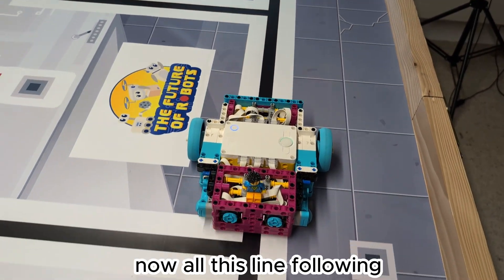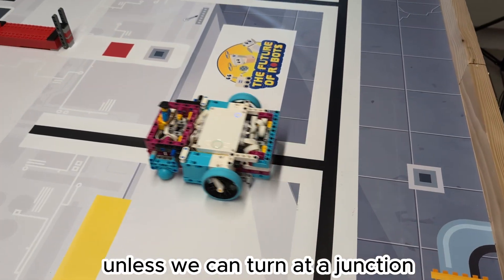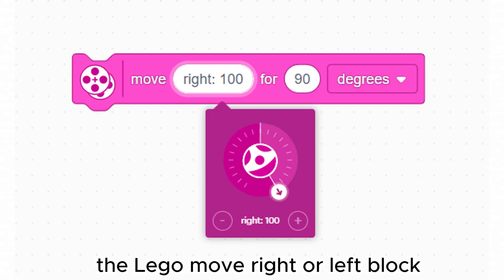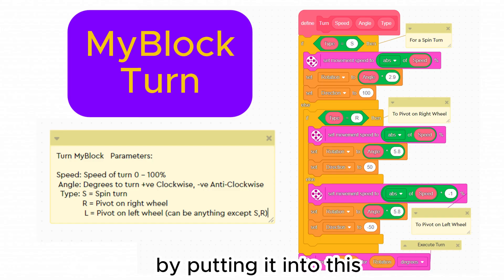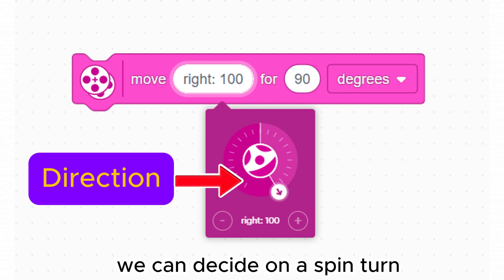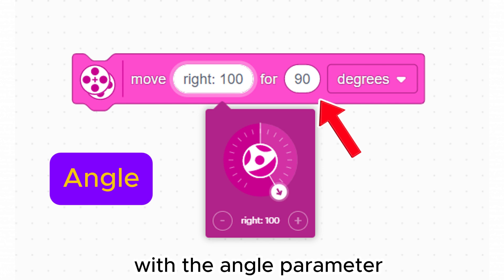Now all this line following is not much use unless we can turn at a junction. The LEGO move right or left block does quite a good turn. I have made it a bit more user friendly by putting it into this turn my block. With the direction parameter we can decide on a spin turn or a pivot turn. With the angle parameter we specify the angle to turn.